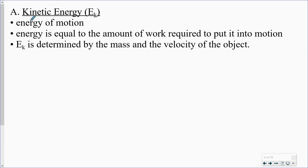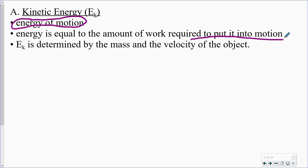So kinetic energy — what are we talking about? It is the energy of motion. You need to know that all kinds of motion — when you're walking, that is kinetic energy; when you're throwing a ball, when you're driving a plane that's flying, something that's dropping — all of those are different kinds of motion because there is some movement. The key is there does need to be some sort of movement. Energy is equal to the amount of work required to put it into motion. So EK or KE is determined by mass and velocity.